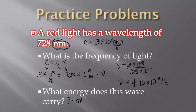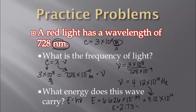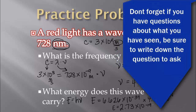When we look at what energy this wave carries, we plug into E equals HV. E is what we're looking for. H is Planck's constant: 6.626 times 10 to the negative 34. Times our frequency that we just found: 4.12 times 10 to the 14th. And we solve for E, getting 2.73 times 10 to the negative 19 joules. Try to use the EE button on your calculator so you don't have to use parentheses when working with scientific notation.